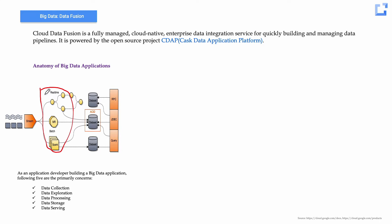Once you figure out the program, you need to figure out where to store that data — intermediary data, resultant data, where the data needs to be landed so programs can use it. There's a big challenge of ACID compatibility, relational vs. non-relational data. That's the data sets challenge. The third part is the serving layer — RPC, JDBC, query APIs — different ways to service that data internally or externally.